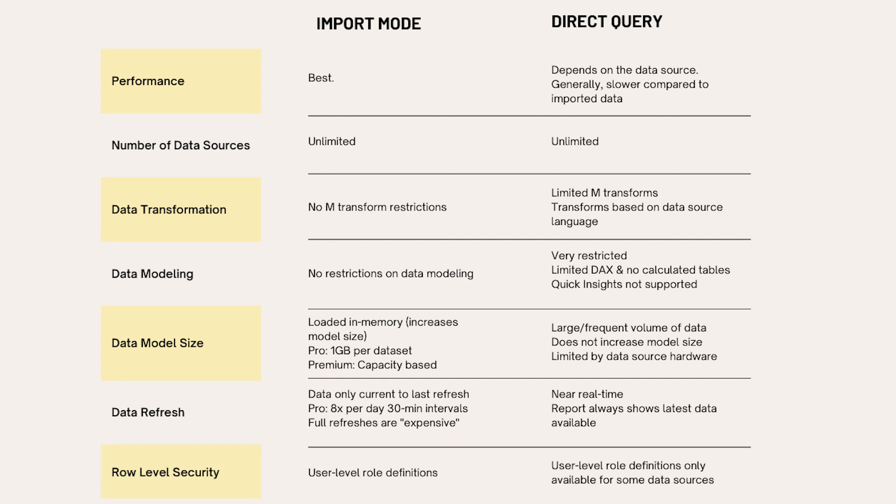When it comes to row-level security (RLS), using import mode has no restrictions — you can define RLS based on the data source you are using. But for Direct Query, row-level security roles are only available for some Direct Query data sources, not all of them. That's a very important consideration and a significant limitation if you plan to implement row-level security.